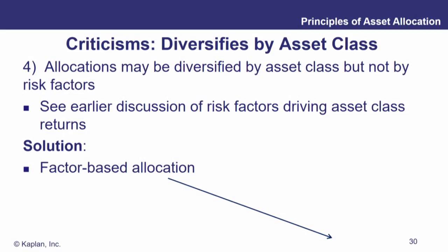More criticisms of mean variance optimization. Allocations may be diversified by asset class, but not by risk factors. So it's an alternative way of looking at things. We talked about risk factors in the past, so review some of those readings if you're unfamiliar with the term. What we can do to try and correct for that is a factor-based allocation.